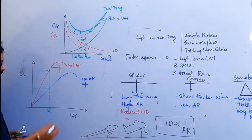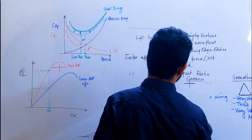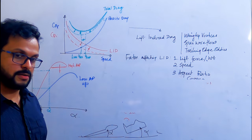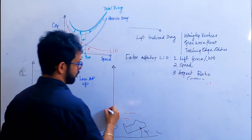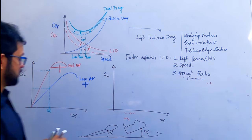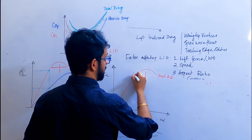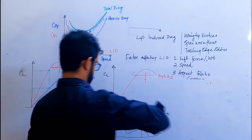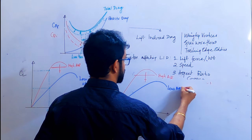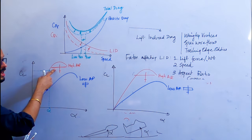We can also say this in a different way. If I want to achieve a particular coefficient of lift, with a high aspect ratio wing I can achieve it at a lower angle of attack. For a low aspect ratio wing, the same lift production can only be achieved at a higher angle of attack.